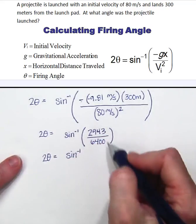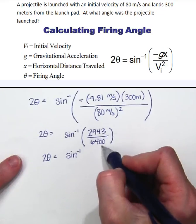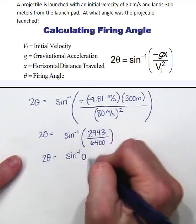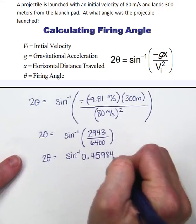In my calculator I am going to divide this out. 2,943 divided by 6,400 I get a decimal of 0.45984 approximately.